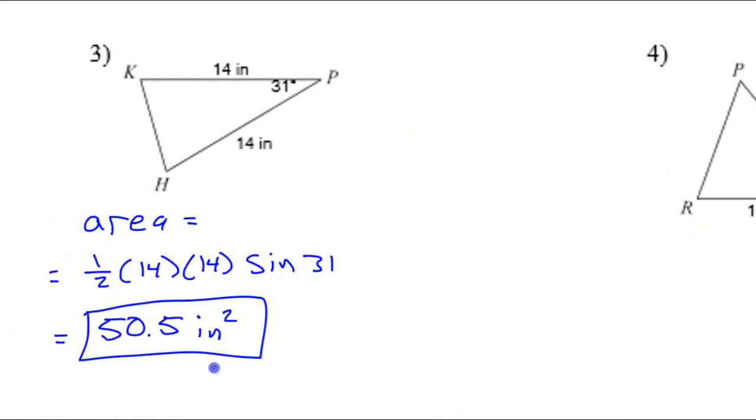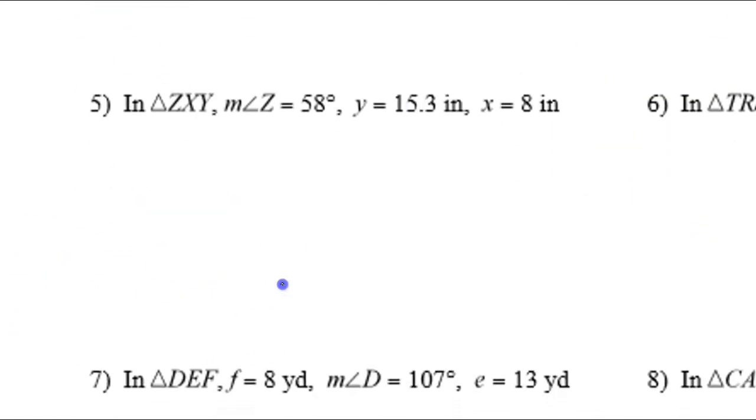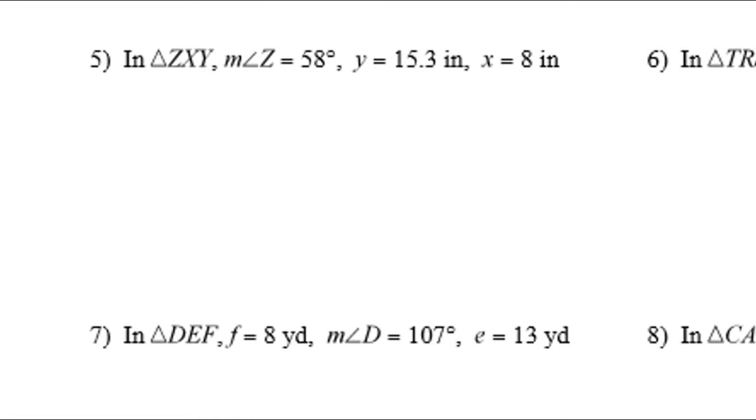Let's take a look at number five. In this problem, they are describing a triangle. They didn't give me a picture, but we could draw our own picture. So there's Z, X, and Y mentioned.